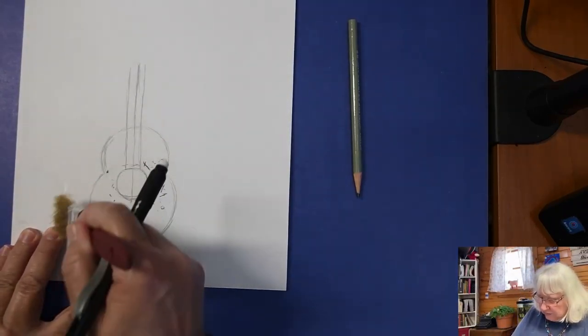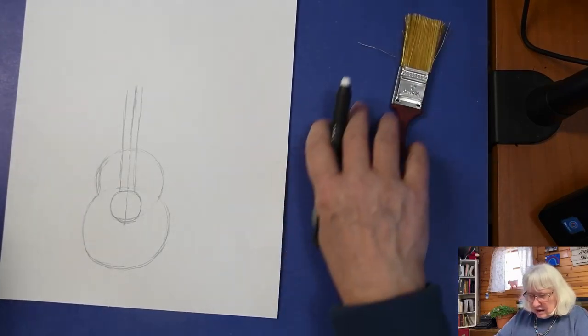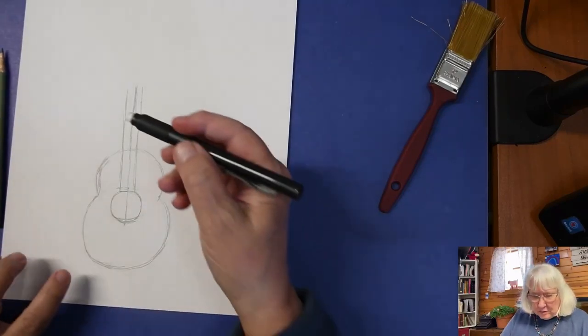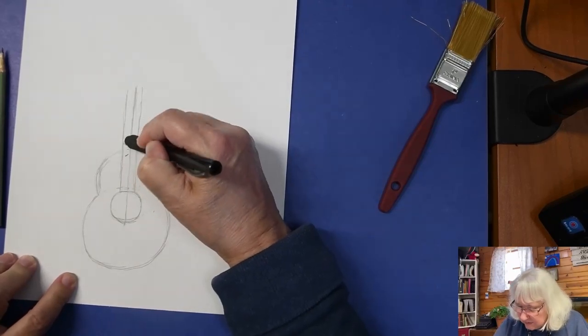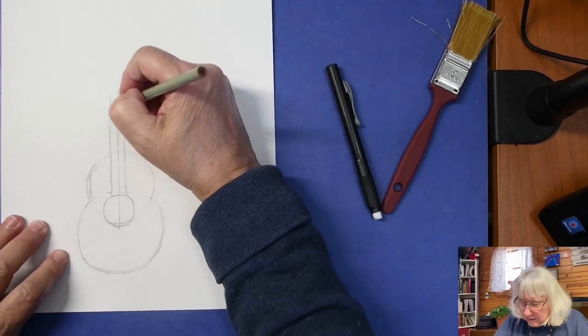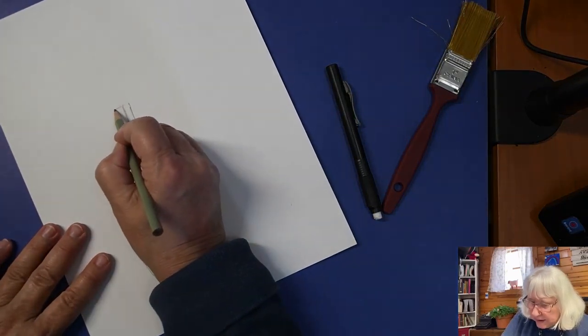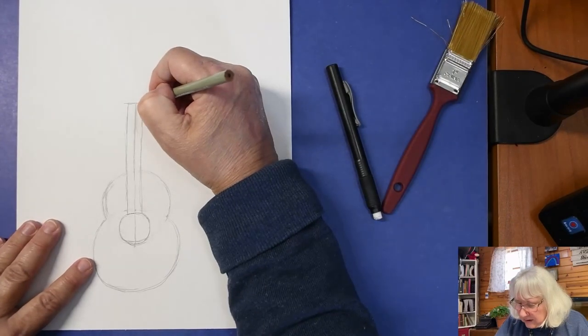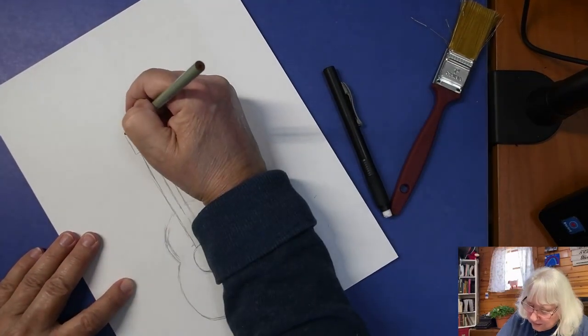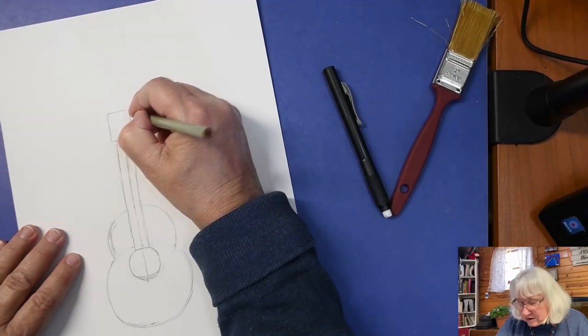When you erase, if you have a little small paint brush to flick away your eraser crumbs, I really like using one of those. We're on page two already. We need to erase here. It looks so much better all cleaned up here. Now we're going to add a rectangular shape right up here. This is where the tuning keys go and where the strings hook in. You can make this whatever size you want. You can make your guitar however you want to make it. It's your drawing.